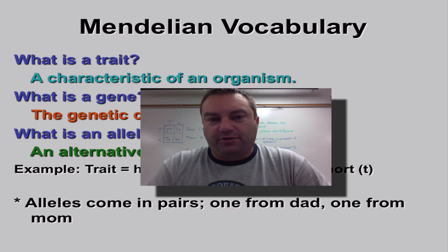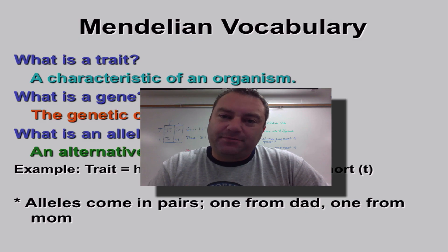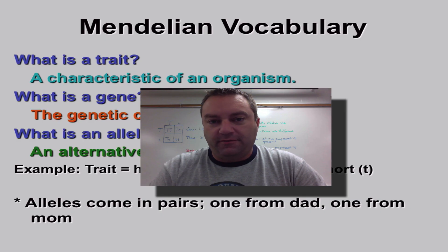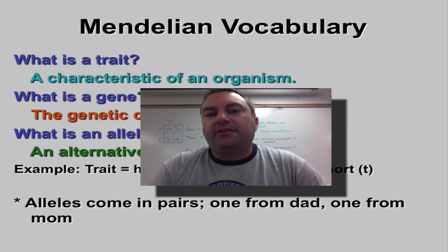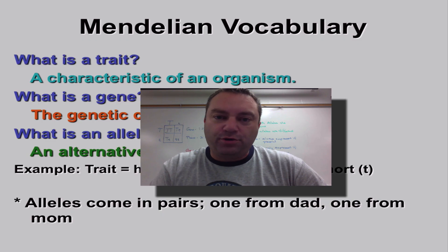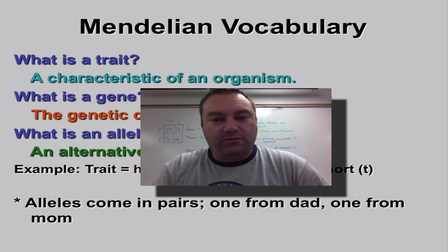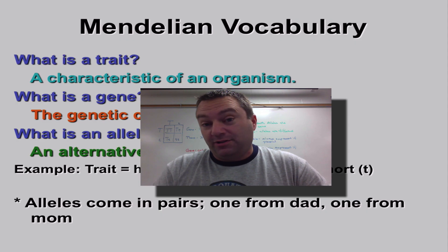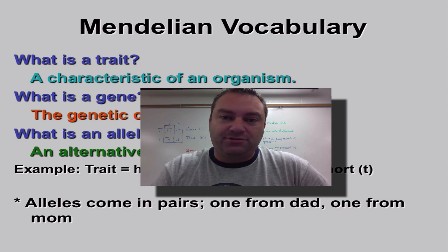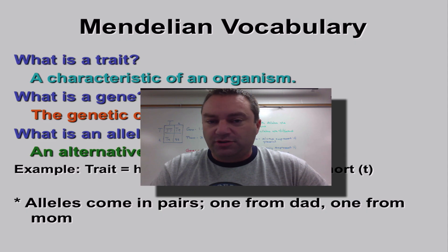Welcome to part number seven from chapter 11. This episode is by far the most important episode of this series, because we're going to talk about the vocabulary of Mendelian genetics. You have to know exactly what all these vocabulary words mean if you want to be able to do genetic problems correctly. Bookmark this episode so you can watch it before your tests and quizzes, because without knowing this stuff, you're going to have a hard time understanding Mendelian genetics.